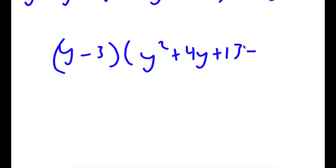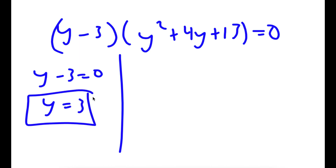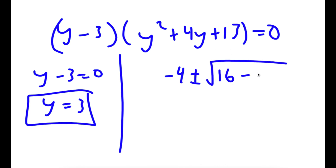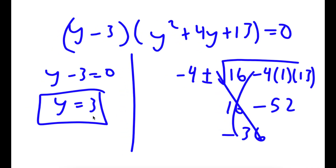So now this gives me two equations. I have y minus 3 is equal to 0, meaning y is equal to 3. And I have y squared plus 4y plus 13 equals 0. To solve this, I'm going to use the quadratic formula: negative 4 plus or minus the square root of 4 squared minus 4 times 1 times 13. This gives 16 minus 52, which is negative 36. You can't take the square root of a negative number, so my only solution for y is 3.